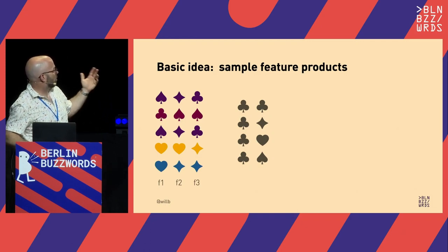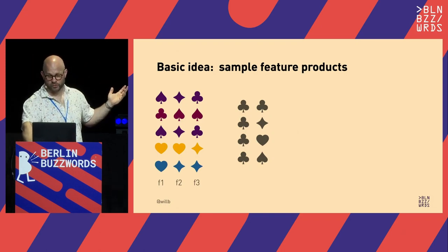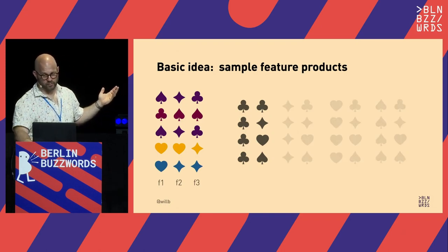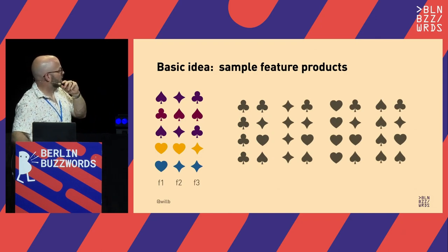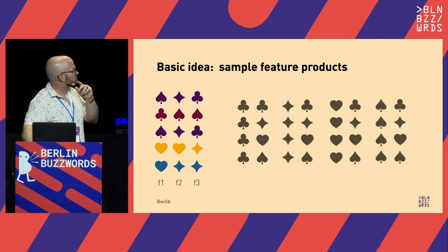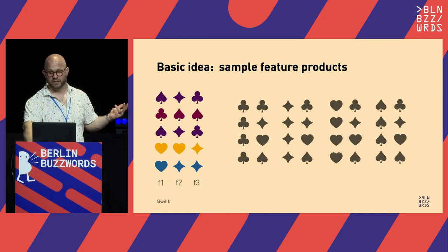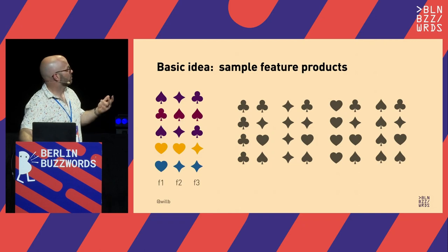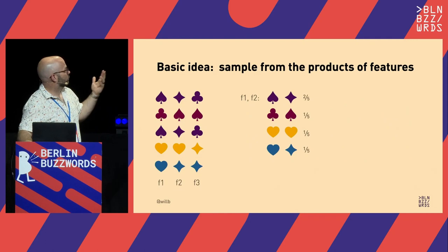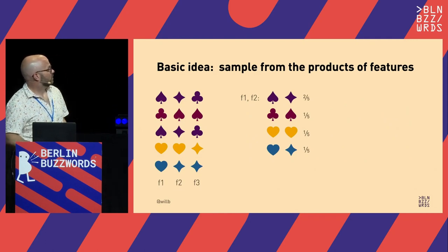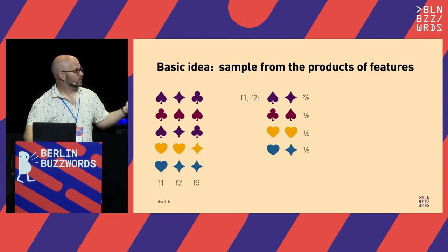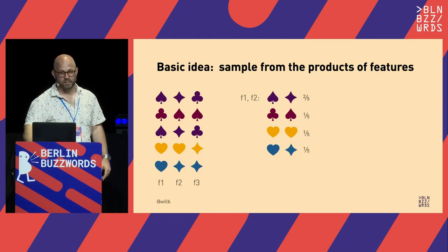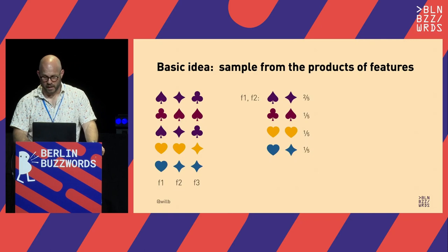The basic idea is that instead of sampling from individual features, we make a combined feature out of the product of two features and sample from that. If we think about all the possible combinations in columns F1 and F2, we have 32 possible combinations — some of which actually happen in our dataset and some don't. We can identify the ones that happen, identify how common they are, produce a probability for these combinations, and sample from that.